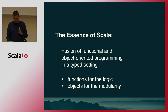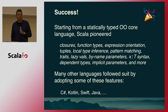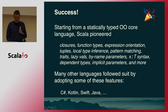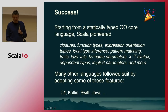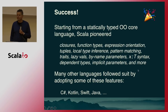I think I can claim it has been very successful so far. Scala started from a statically typed object-oriented core with functional features and then added a lot: closures, function types, expression orientation, no more distinctions between statements and expressions, tuples, local type inference, pattern matching, traits, lazy vals, by-name parameters, colon-T syntax, dependent types, implicit parameters, and more. Most of these things in one way or another have found their way into other languages.